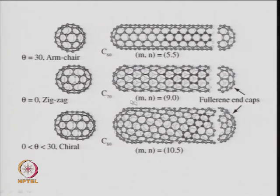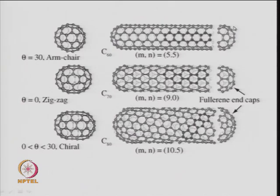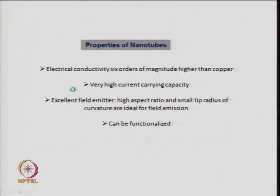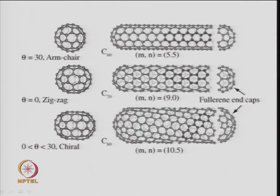For example, for a nanotube where m and n are not equal and n equals 0, the chiral angle is 0 — this is the zigzag form. To cap the end of this zigzag nanotube you need a fullerene structure that is not C60 but is actually close to the C70 structure. C70 is that kind of molecule, and if you take half of it you can close the end of this nanotube.